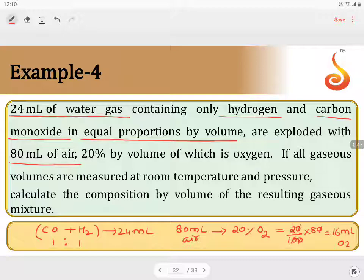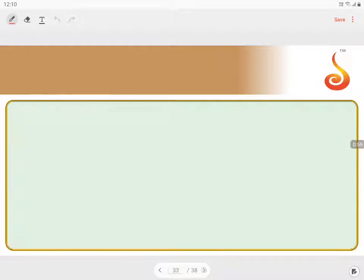Now if all the gaseous volumes are measured at room temperature and pressure, calculate the composition by volume of resulting gaseous mixture. We have to find the resultant composition. Let us say CO and H2. They are in 1:1 ratio. So 12 mL is carbon monoxide, 12 mL is hydrogen, which are divided equally, the 24 mL.